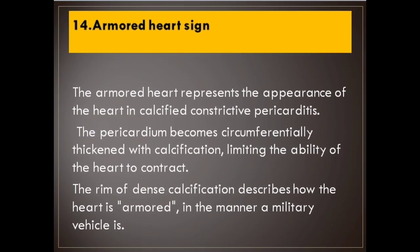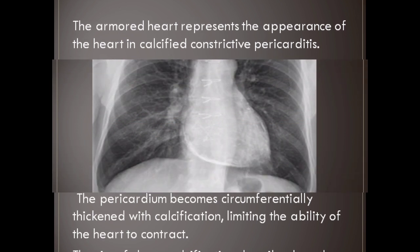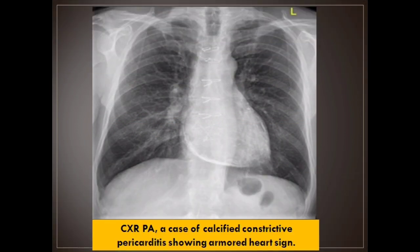Number 14: Armored heart sign. The armored heart represents the appearance of the heart in calcified constrictive pericarditis. The pericardium becomes circumferentially thickened with calcification, limiting the ability of the heart to contract. The rim of dense calcification describes how the heart is armored, in the manner a military vehicle is.